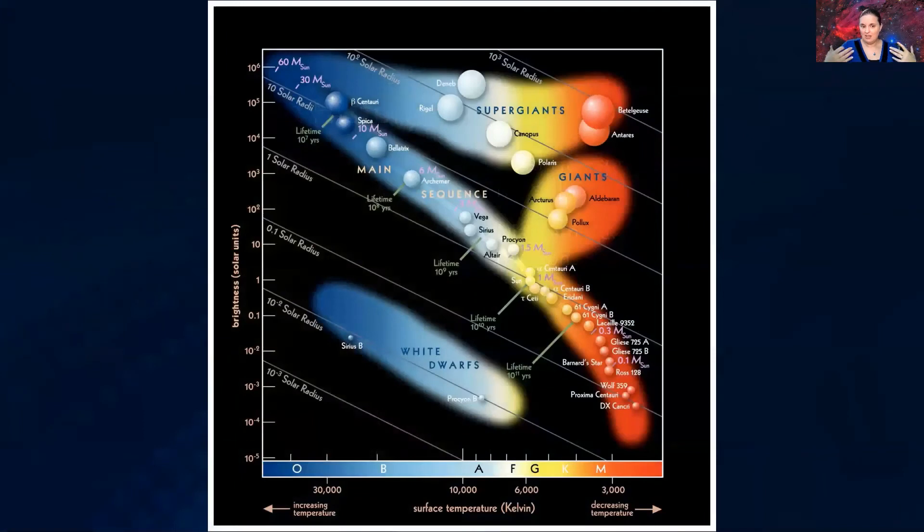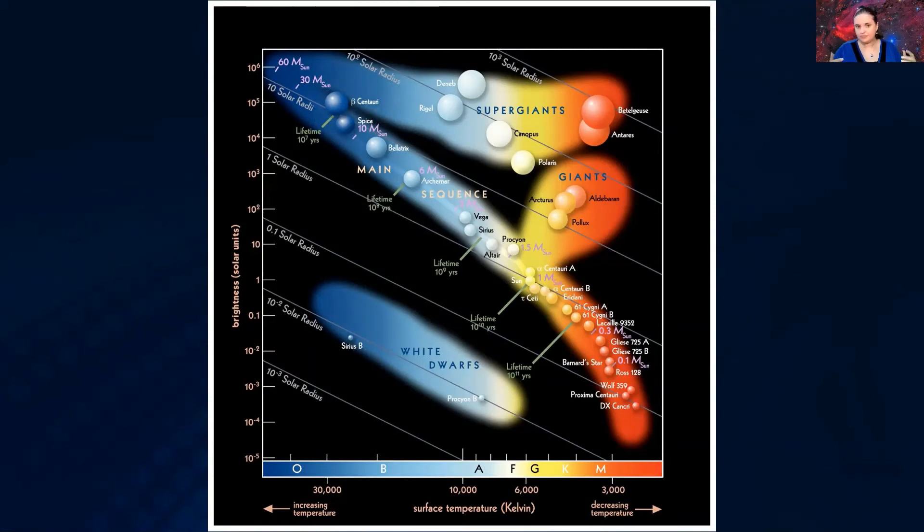And today, this is the HR diagram that we know of. And these are the patterns that are starting to form. That most stars with temperature on the bottom in Kelvin and solar brightness on the left, like how bright the star is, as well as the spectral class on the bottom and their colors, they noticed that certain trends started to follow with brightness.